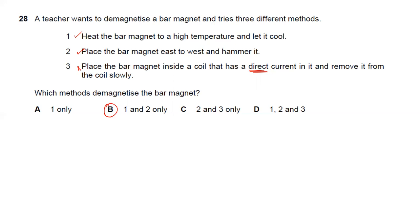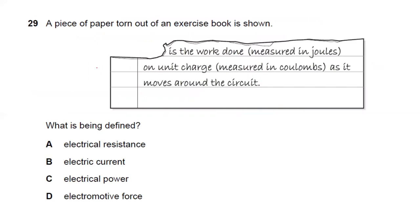Question twenty-nine: the definition given is the work done in joules on unit charge as it moves around the circuit. This describes electromotive force (EMF) or potential difference. Answer D is the right answer.